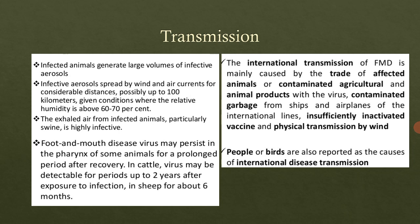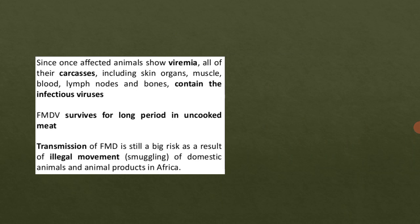People and birds are also reported as causes of international disease transmission. A person who contacts contaminated agricultural products or garbage and then contacts another animal can transmit the virus to that animal. Additionally, once affected animals show viremia — that is, the presence of virus in the blood — further spread occurs.